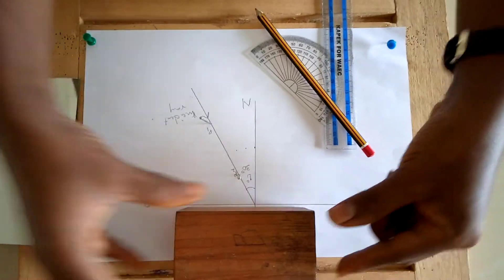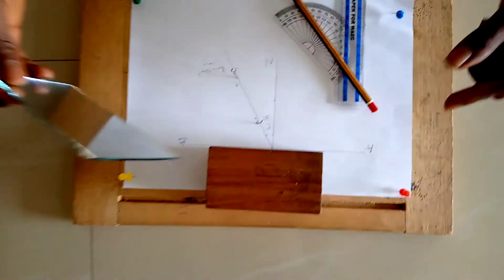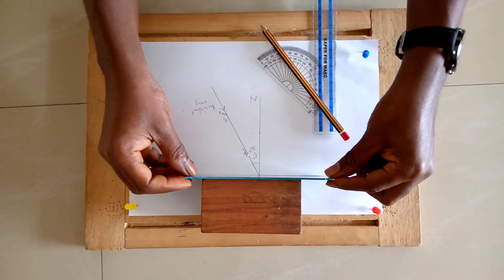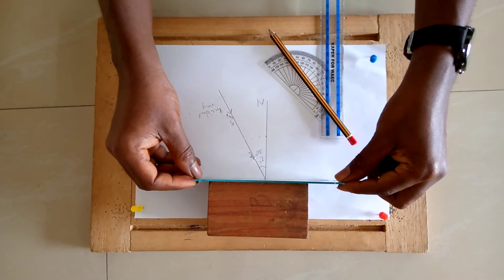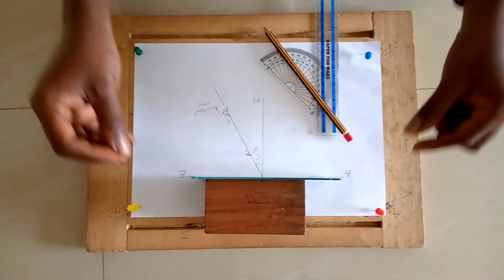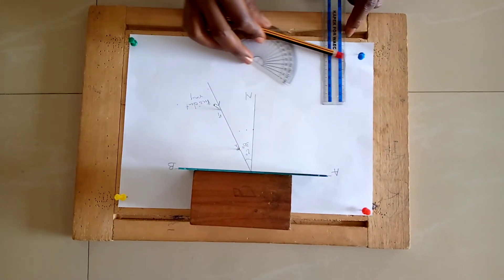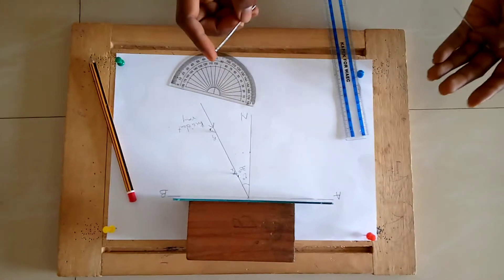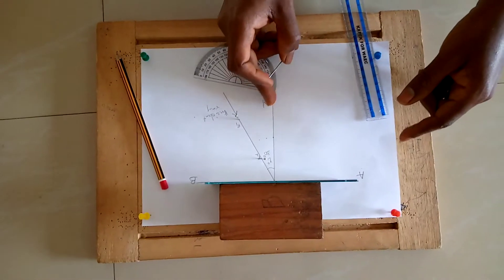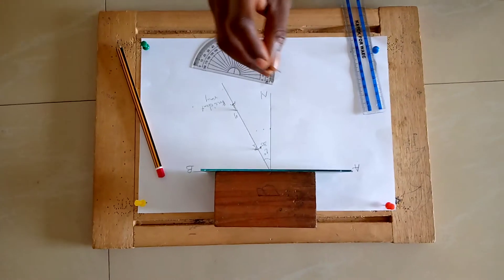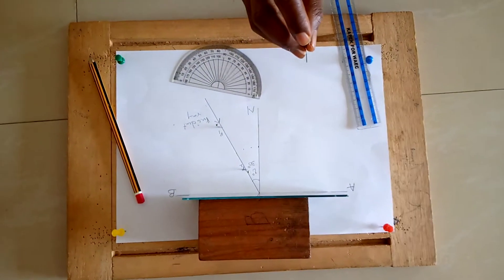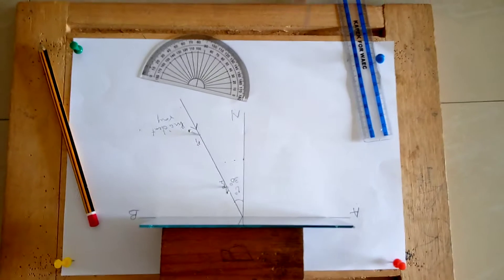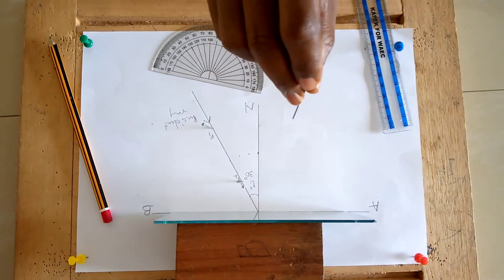Put your wooden block to hold the mirror. Place your mirror in such a way that the middle of the mirror will be at your normal. Then look to the other side, the left hand side of your paper which is AN. By closing one eye, gradually adjust the other eye so that the two pins P1 and P2 will align with each other in a straight line.